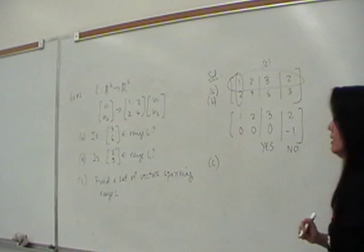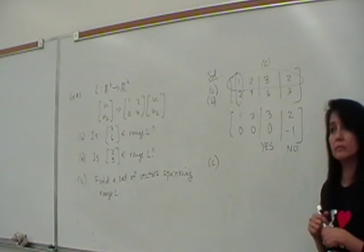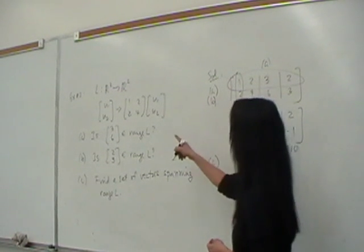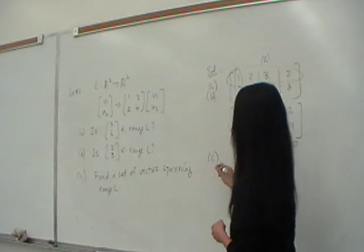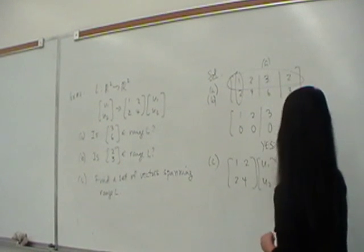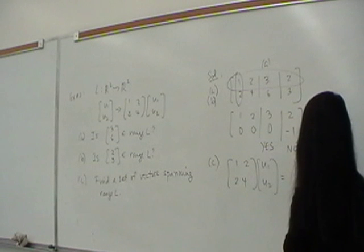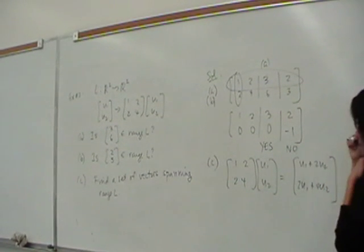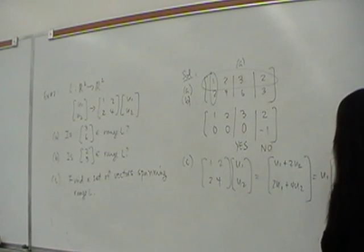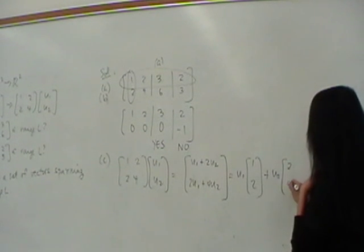How do we answer part C? Find a set of vectors spanning range L. So we want to look at what the range of L will look like. What will the elements of range L look like? Aren't these the answers in range L? So therefore, if you look at that, that's 1, 2, 2, 4. Carry out the multiplication. So we get what form? U1 plus 2U2, 2U1 plus 4U2. Correct? And then what?